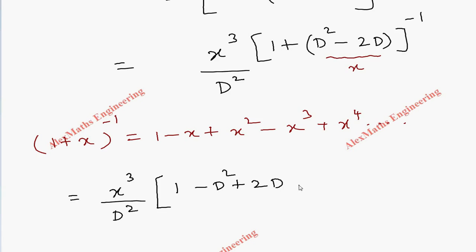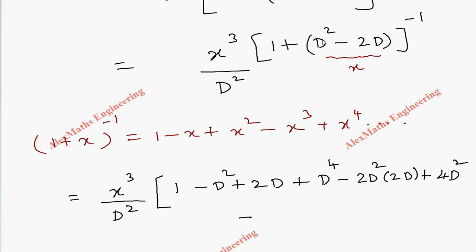Expanding: the x² term gives (D² - 2D)² = D⁴ - 4D³ + 4D², and the x³ term gives -(D² - 2D)³ which contributes -8D³ at the leading relevant power. Higher powers beyond D³ can be ignored because differentiating x³ more than three times gives zero.